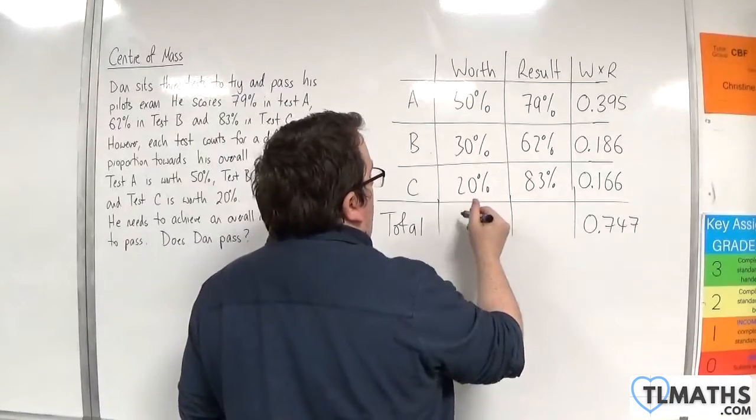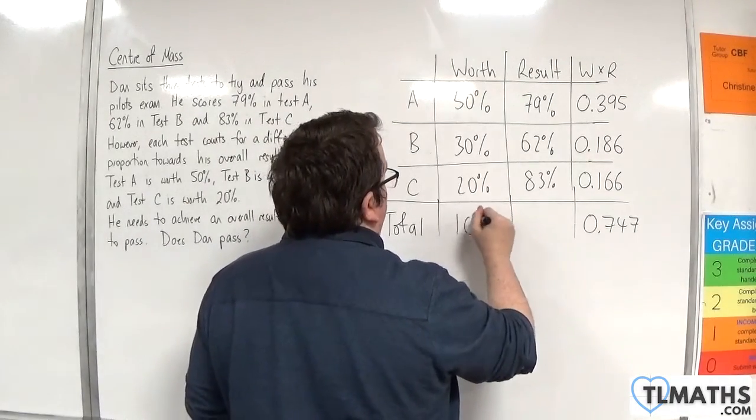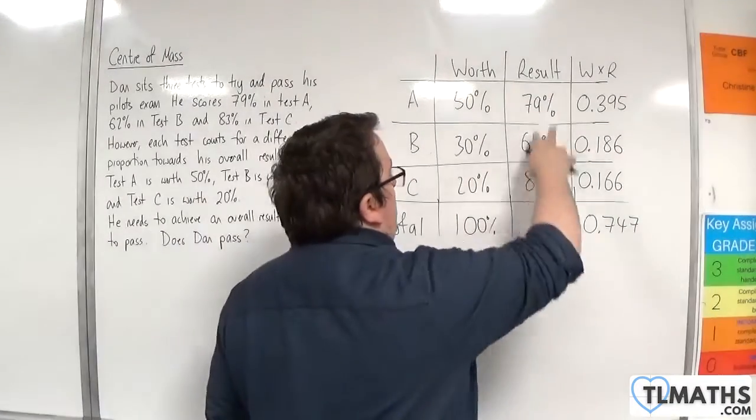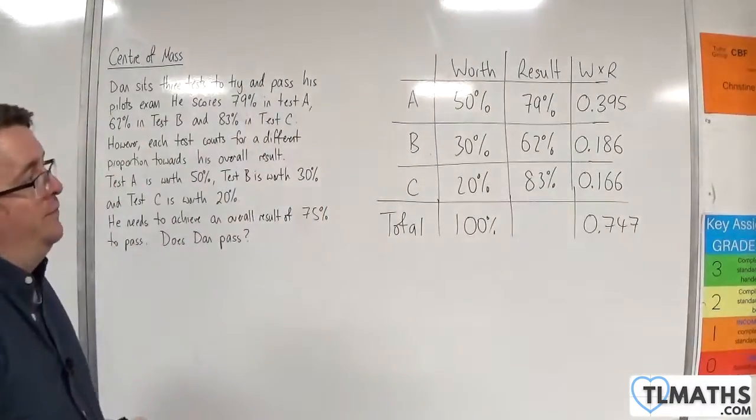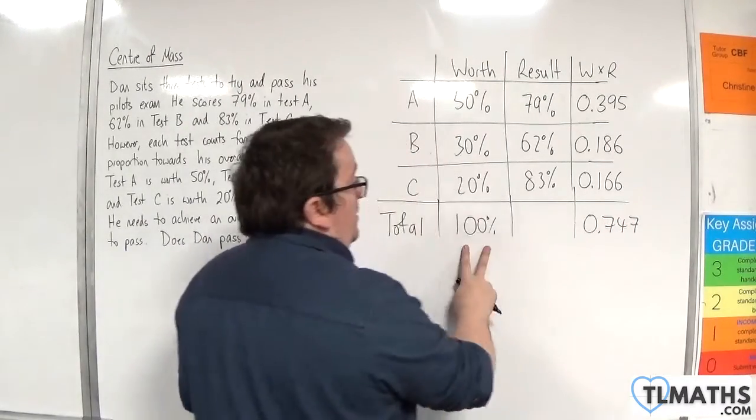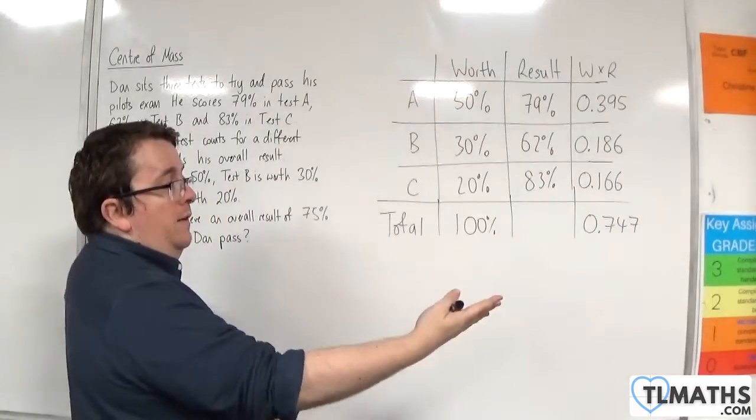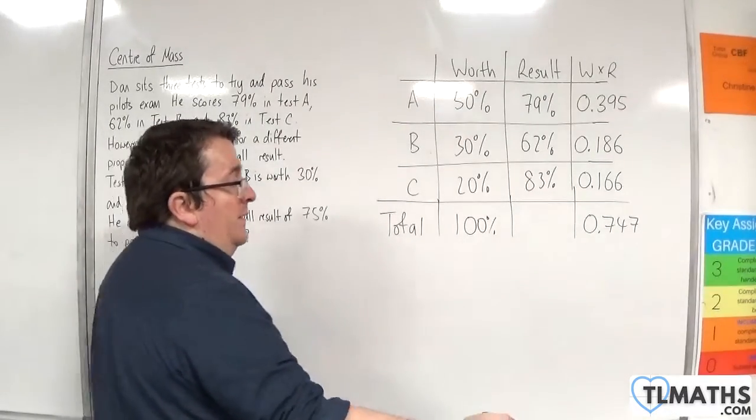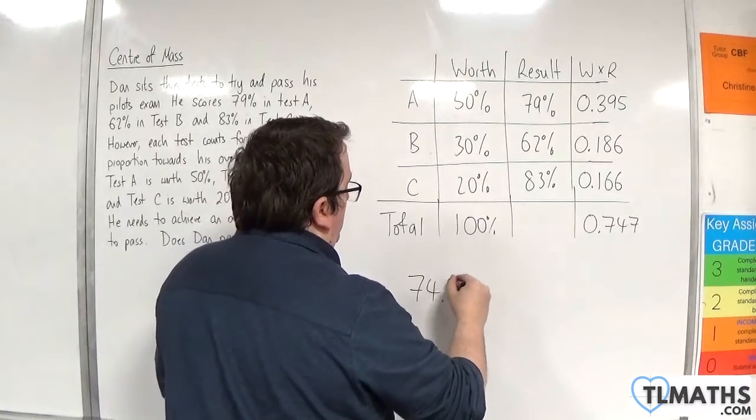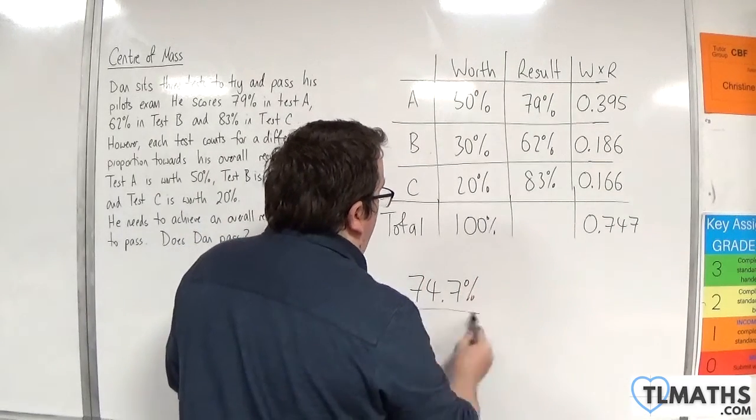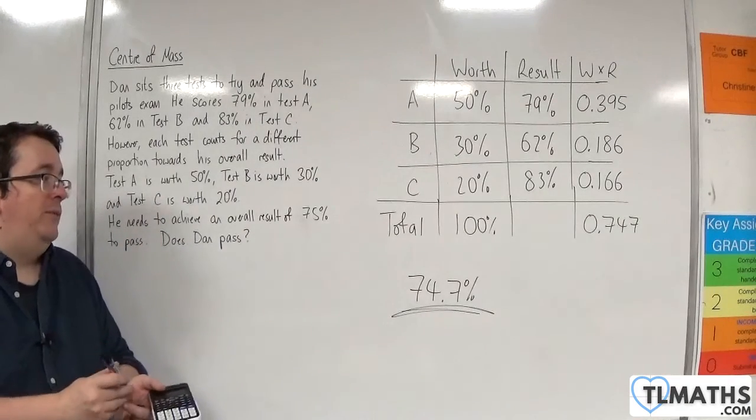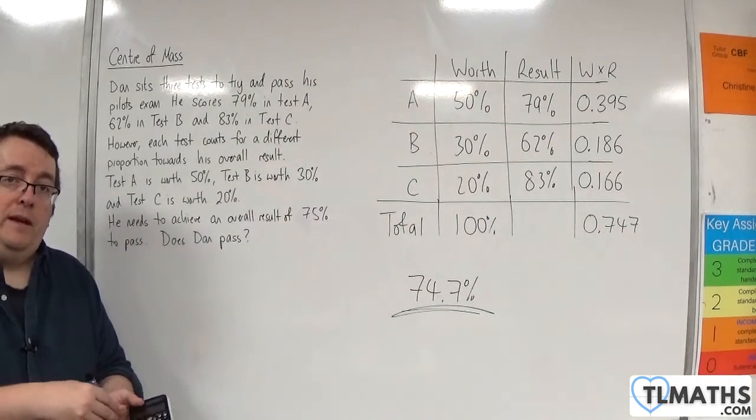Now, the total worth, of course, is 100%. We don't need to add up the total of the results. That wouldn't make much sense. So, what we've got is that value divided by that value. So 0.747 divided by 1 is, of course, 0.747. So that as a percentage is 74.7%. So this is Dan's score, which is unfortunately below the result 75% that he was looking for. And so he does not pass.